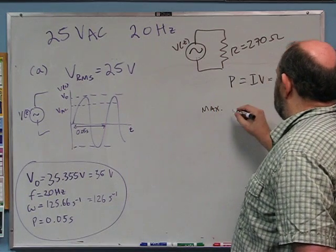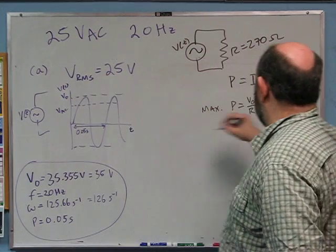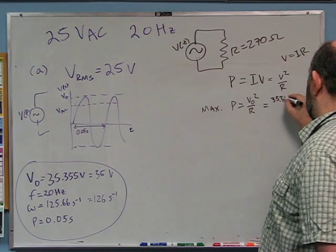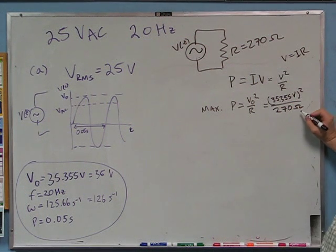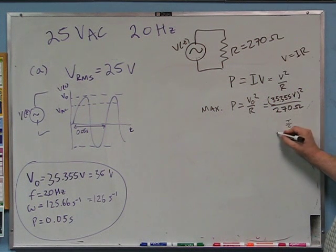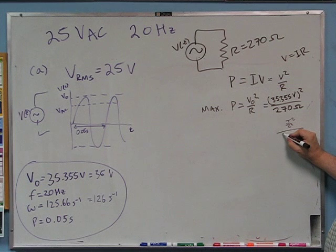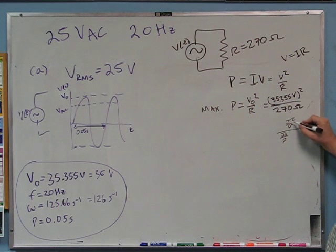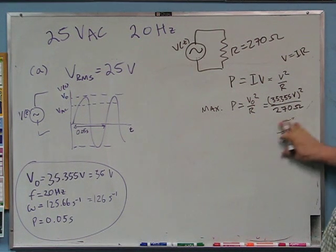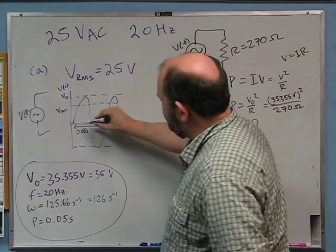The maximum instantaneous power is V_0 squared over R — that's the maximum voltage you can get — so it's 35.355 volts squared over 270 ohms. Checking units: volts squared over ohms gives watts, which is correct. The minimum instantaneous power is zero, because when the voltage is zero, there's no power being dissipated.